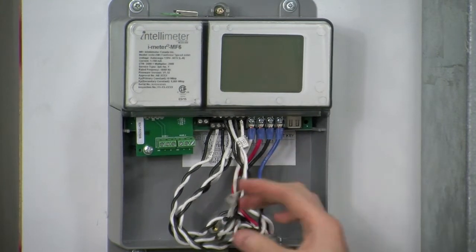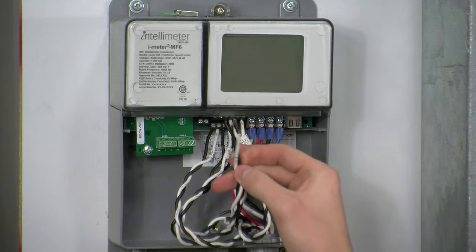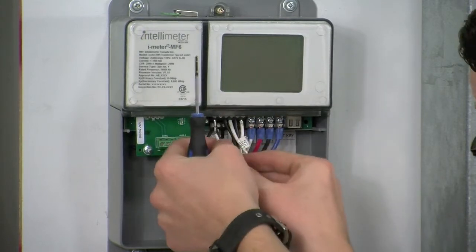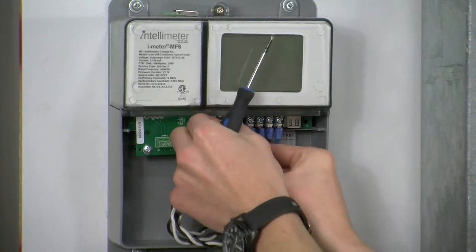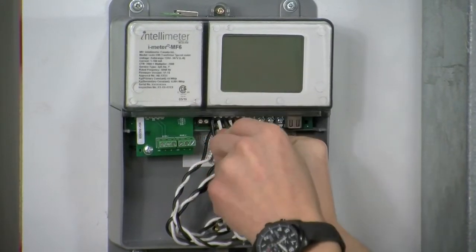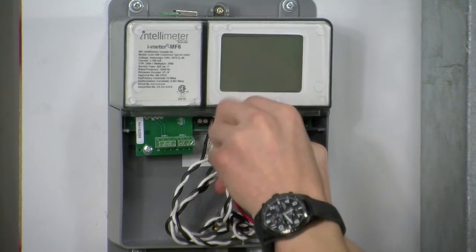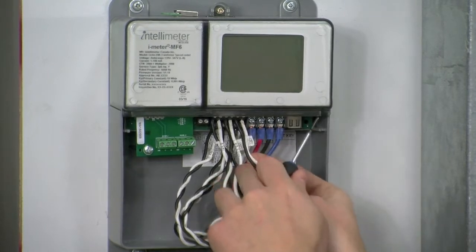Moving up to the top terminal strip, this is for meter two. So, once again, starting from the left, you're going to insert the black lead for CT four, and then the white. You're going to continue the process for CT five next, and then CT six.